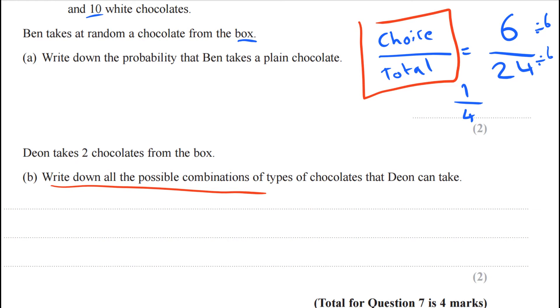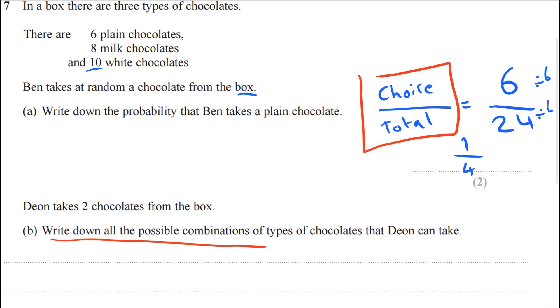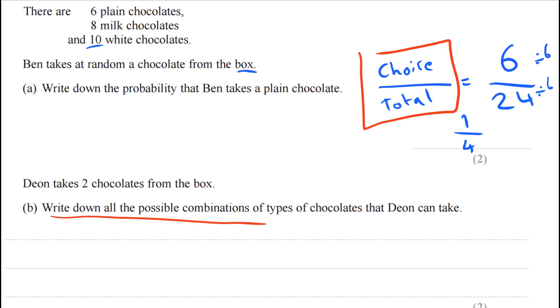Write down all the possible combinations of types of chocolate that he can take. The key thing here when you're writing down a list of combinations, and this is again useful in life as well, is be very systematic with the combinations that you're writing down. Don't just randomly pick, okay, so milk and white, plain and milk, otherwise you'll get lost. So watch how I'm going to do it systematically.